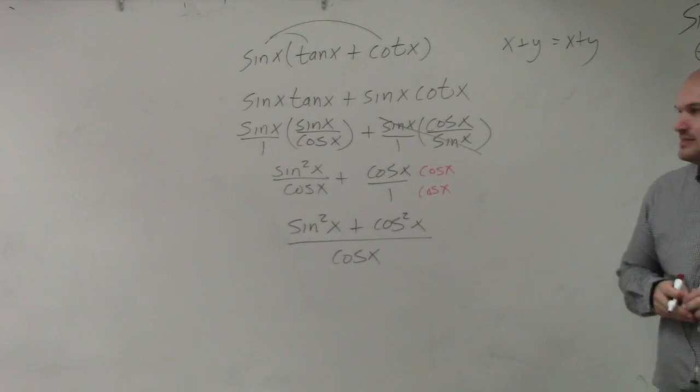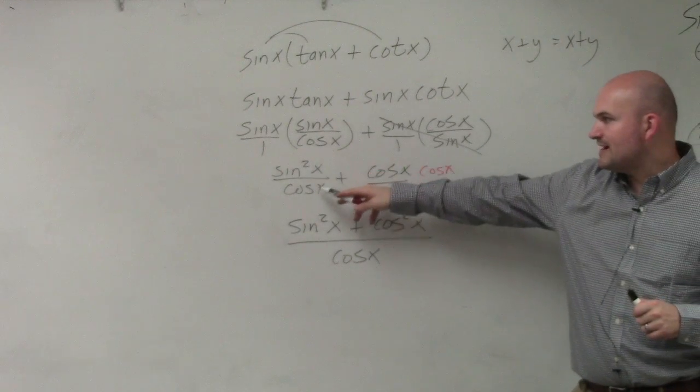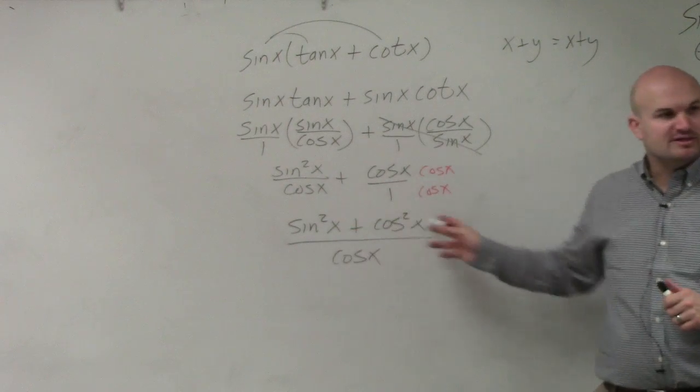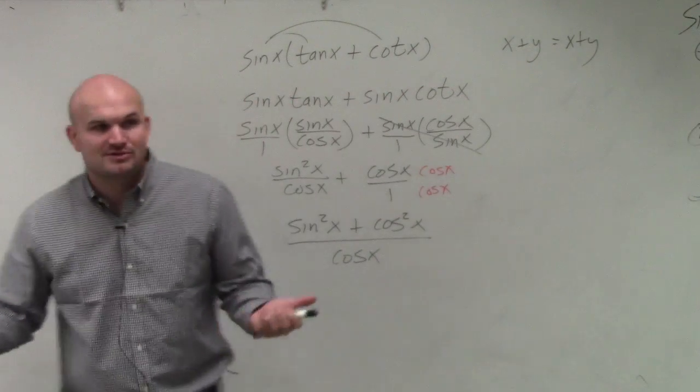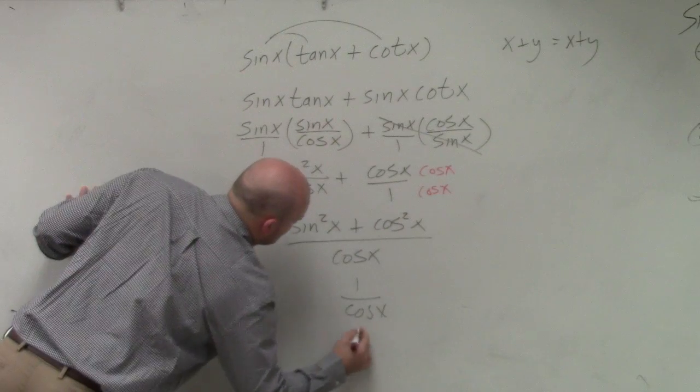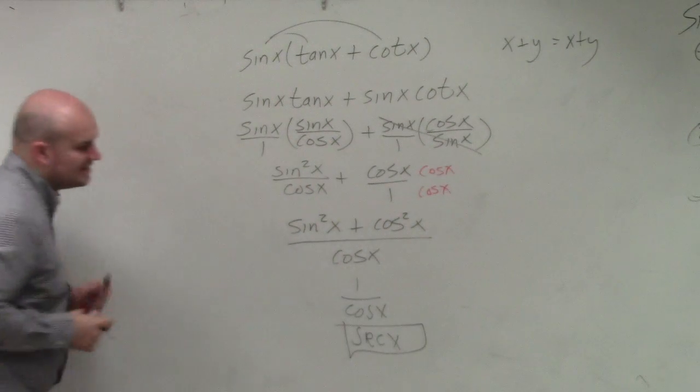Do you guys agree with me? I'm kind of skipping the little steps here. That becomes cosine squared. Sine squared of x over cosine plus cosine squared of x over cosine. You just add the numerators, keep the denominator exactly the same. Now, what's sine squared plus cosine squared? Secant of x.